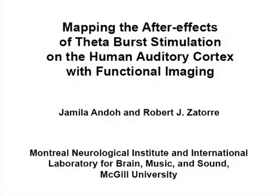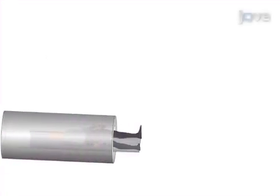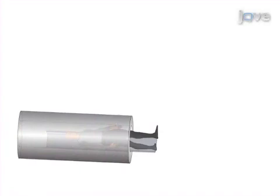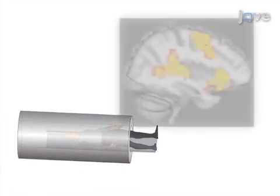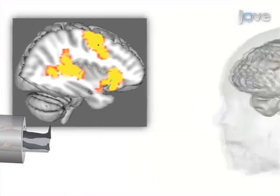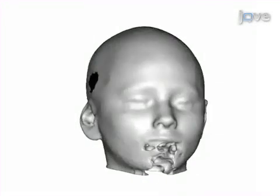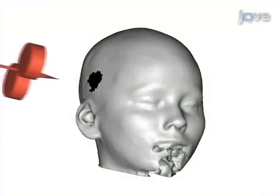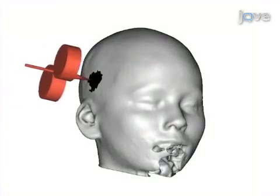The overall goal of this procedure is to combine functional brain imaging with transcranial magnetic stimulation to investigate the auditory cortex. This is accomplished by first carrying out a functional MR localizer in order to identify the network associated with an auditory task. Second, define the stimulation target based on data from the functional MR localizer.